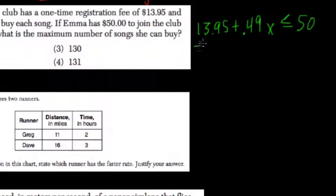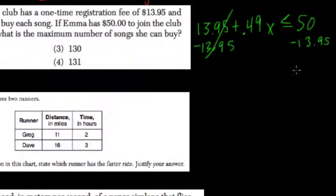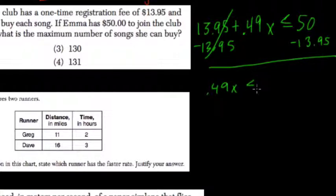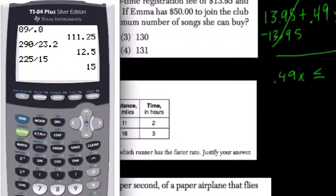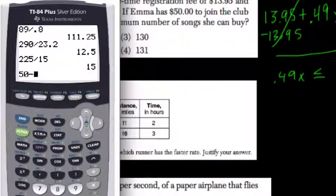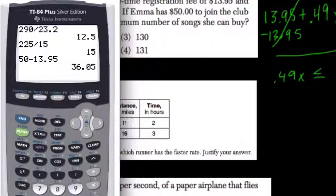So we're solving for x. Subtract $13.95 from both sides, and we get $0.49x is less than or equal to $50 minus $13.95, which is $36.